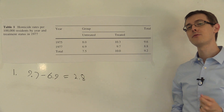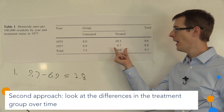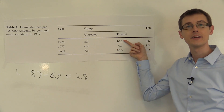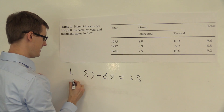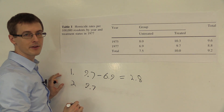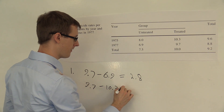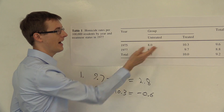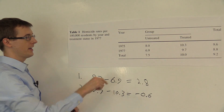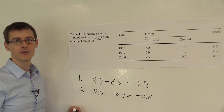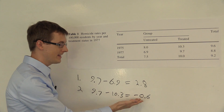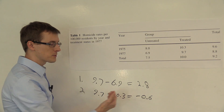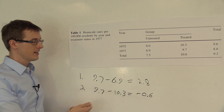The second approach is to do a before-and-after comparison. We just look at the states that had the death penalty in 1977 and compare their outcome when they had the death penalty with their outcome when they didn't. When they had the death penalty in 1977, their outcome was 9.7. When they didn't in 1975, it was 10.3, a difference of minus 0.6. So homicides went down by 0.6 after adopting the death penalty. This suggests that the death penalty actually lowered homicide rates, and that's one way we can use the panel dimension of our data to learn a causal effect.